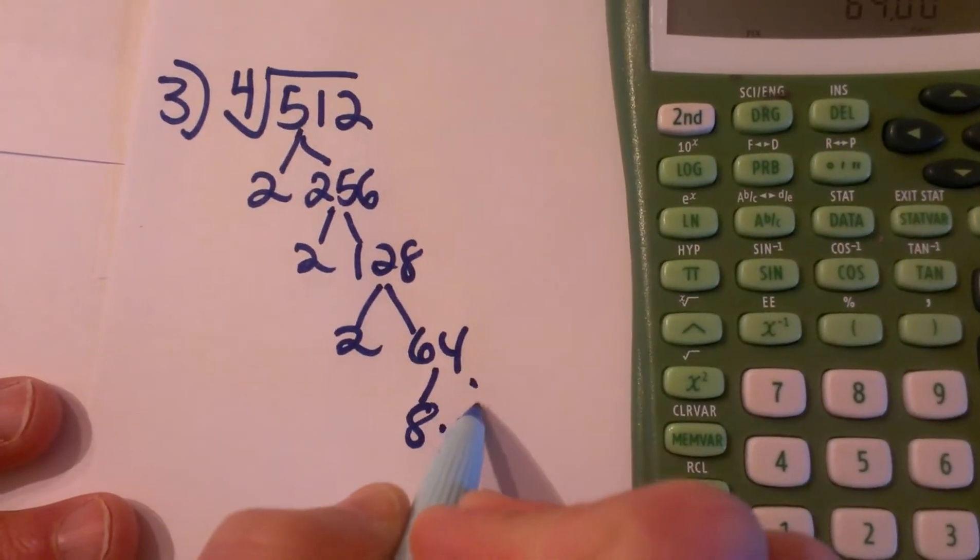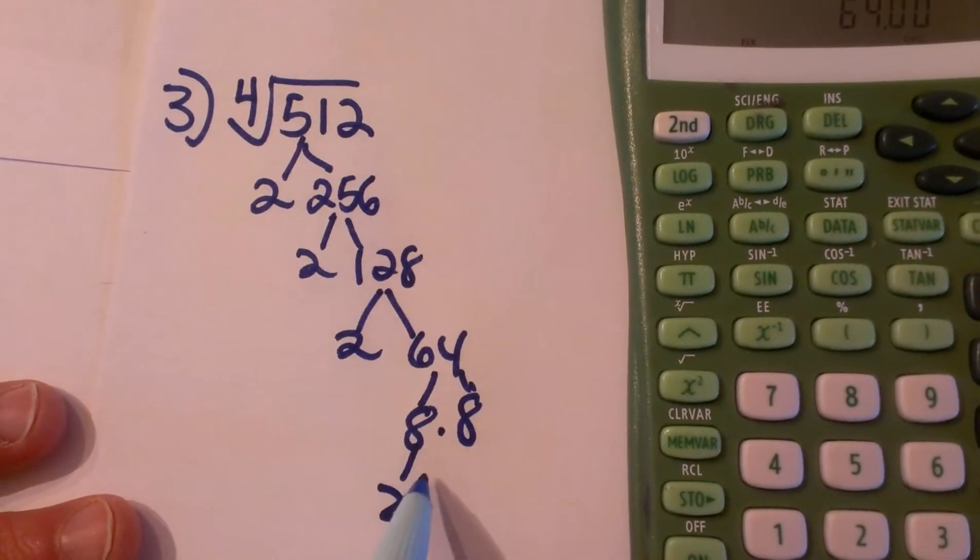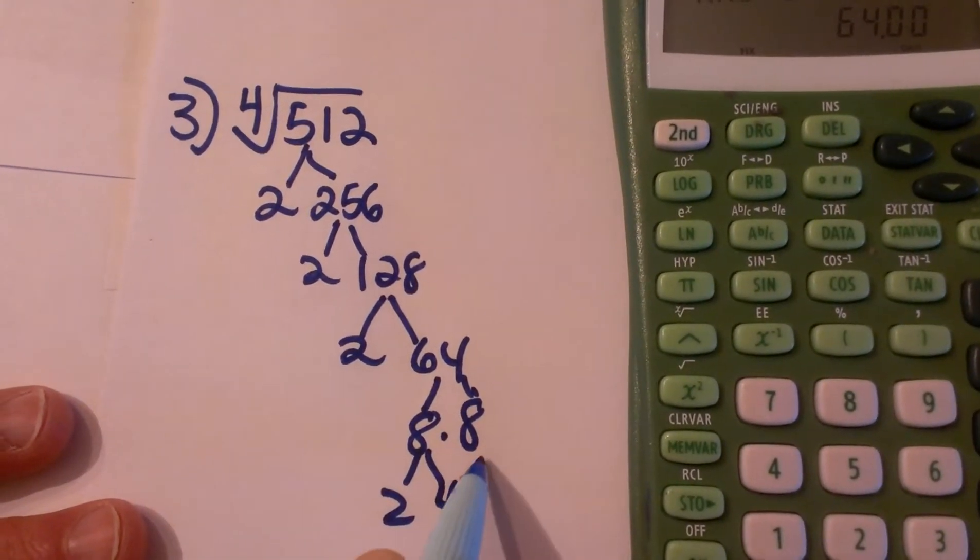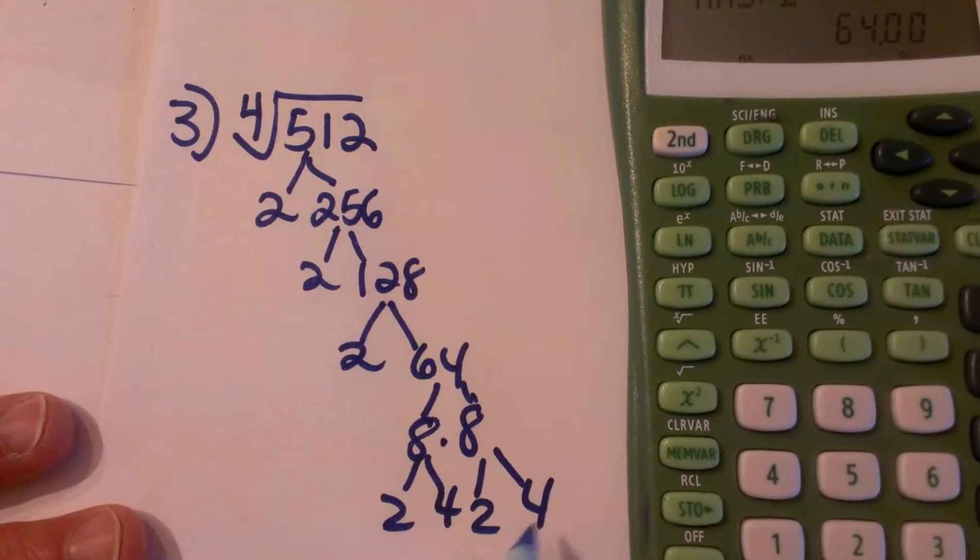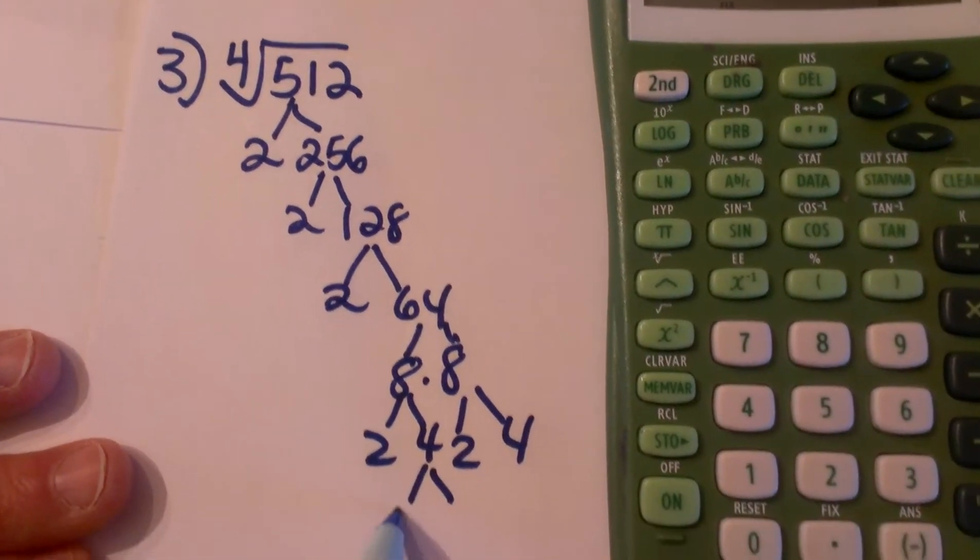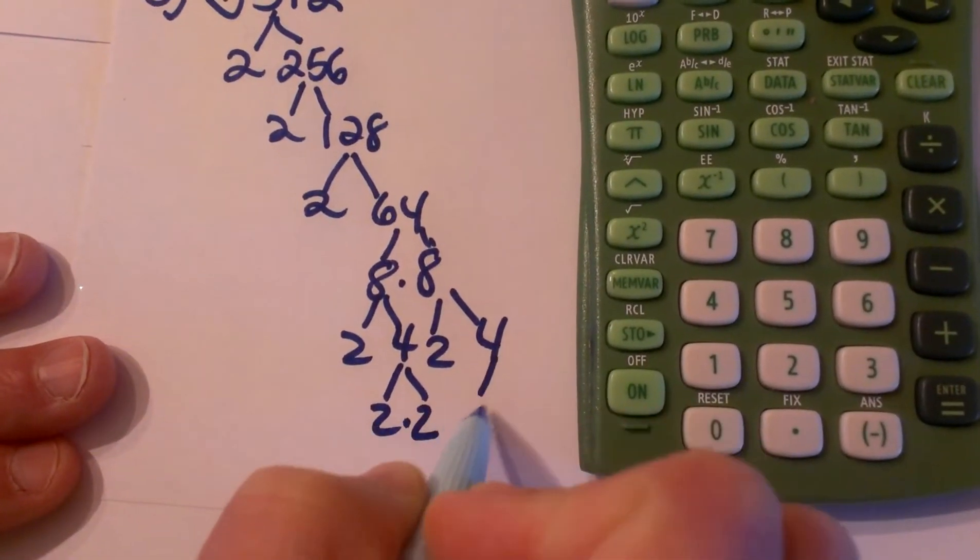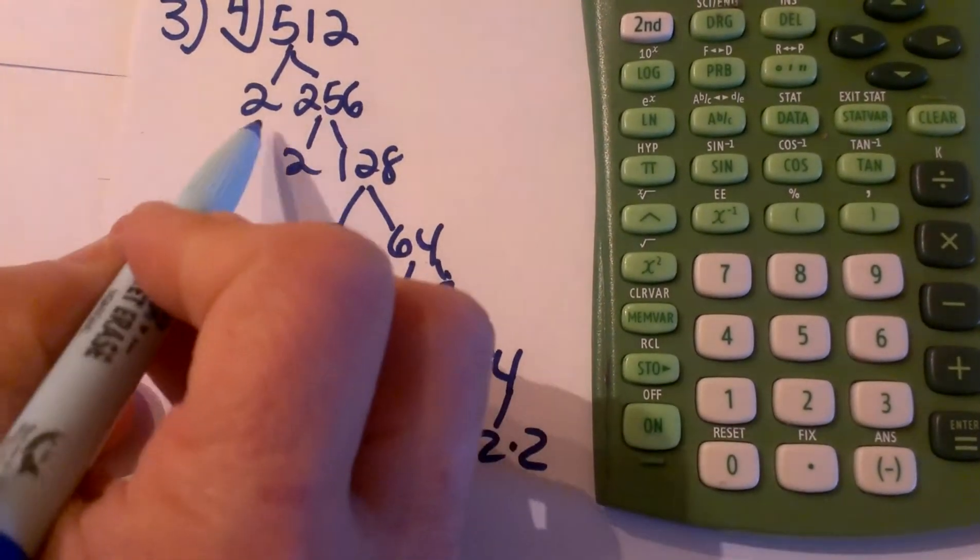Let's just do 8 times 8, and then 8 breaks down to 2 times 4 and 2 times 4, and then I have a 2 times a 2 and another 2 times a 2. So let's see how many 2's we have here.